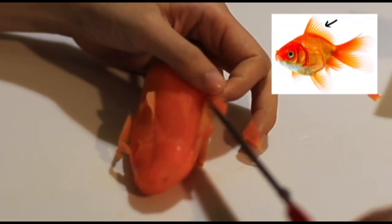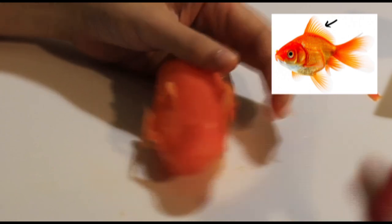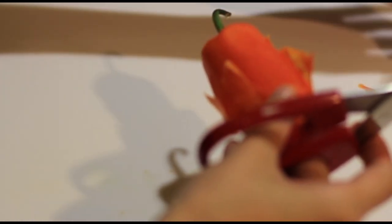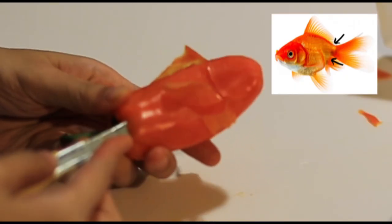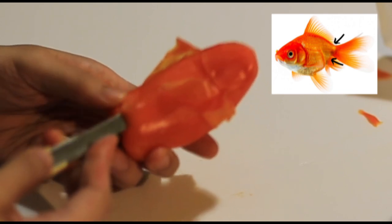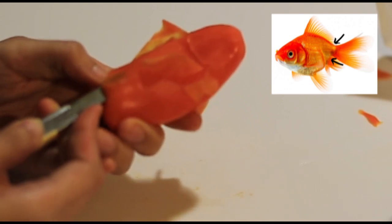Then we are going to observe the shape of the top of the fin and shape it accordingly. Next we are going to shape the back of the fish, which is a little bit more narrow.